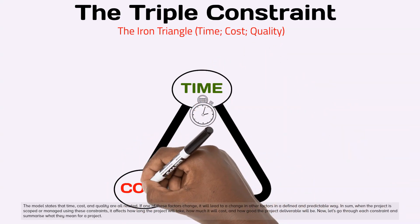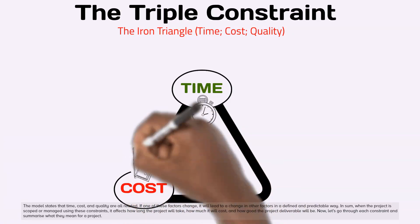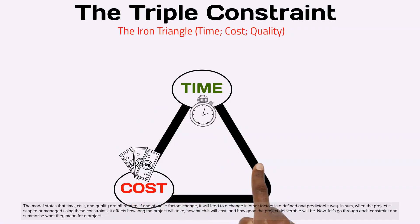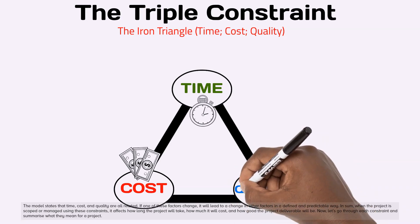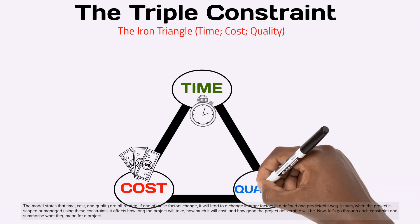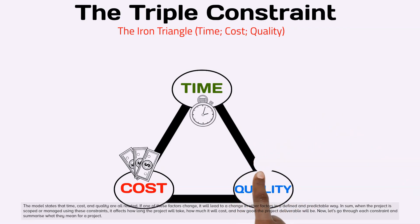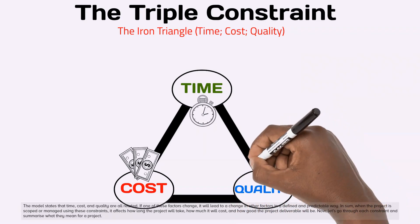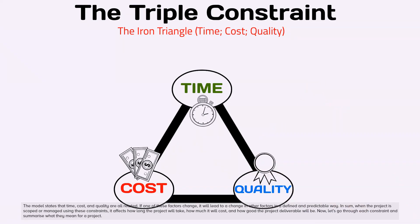When the project is scoped or managed using these constraints, it affects how long the project will take, how much it will cost, and how good the project deliverable will be. Now let's go through each constraint and summarize what they mean for a project.